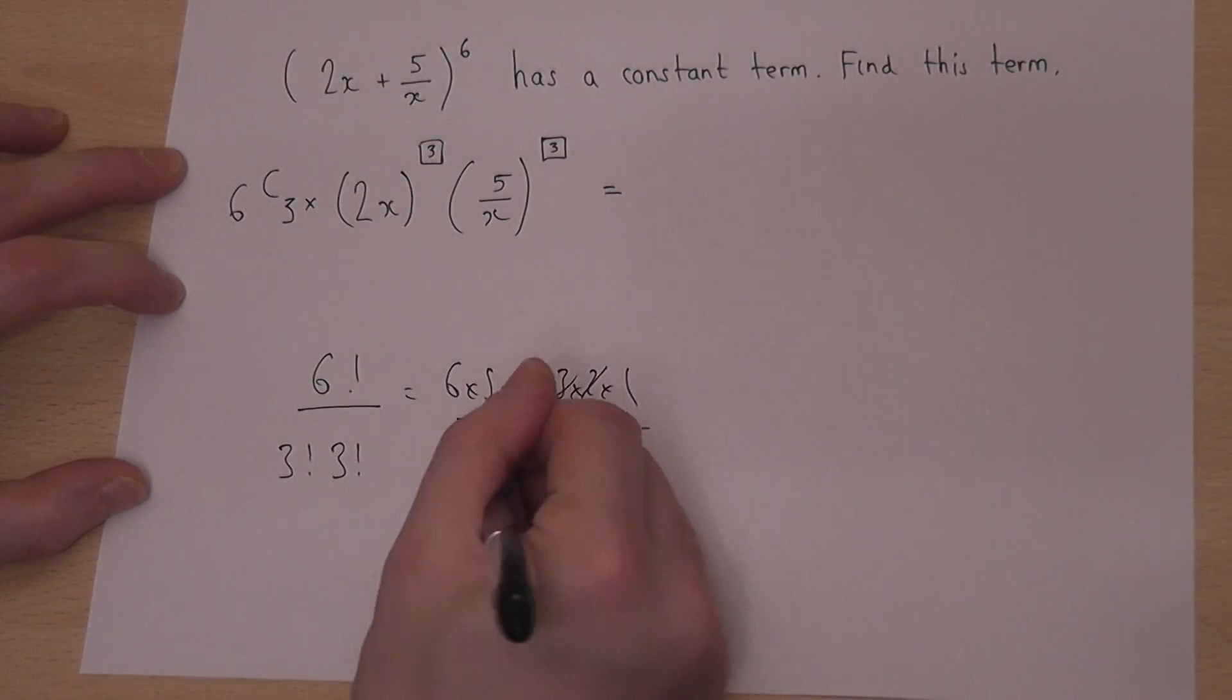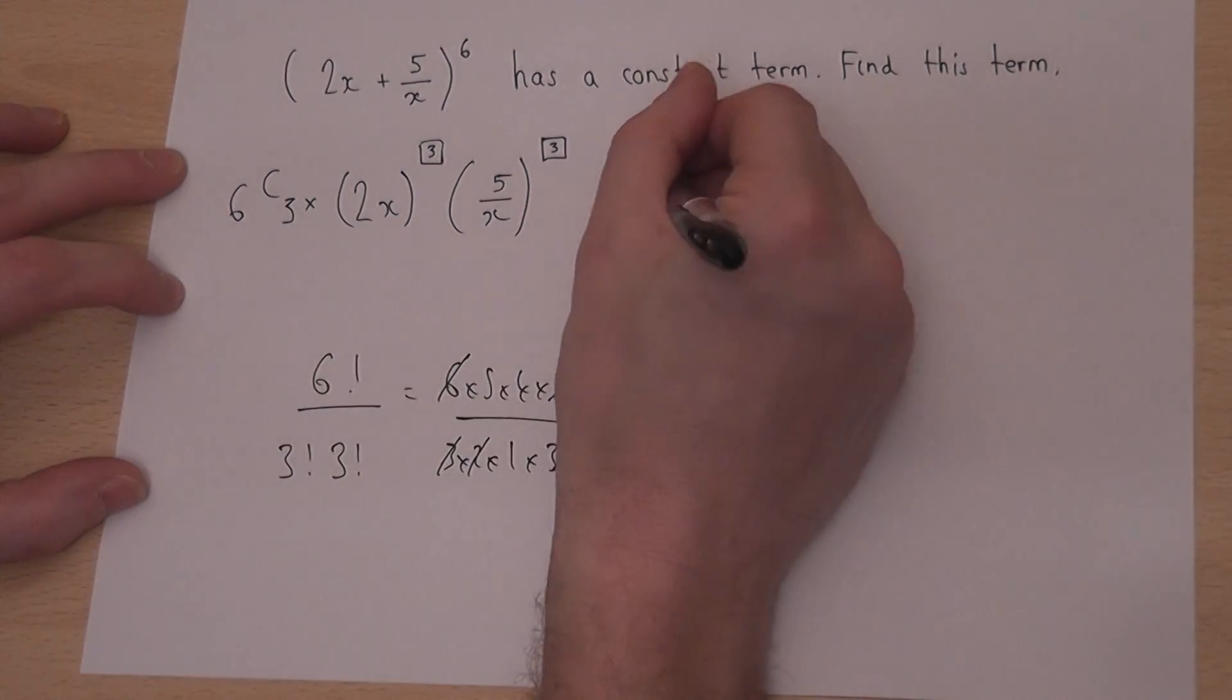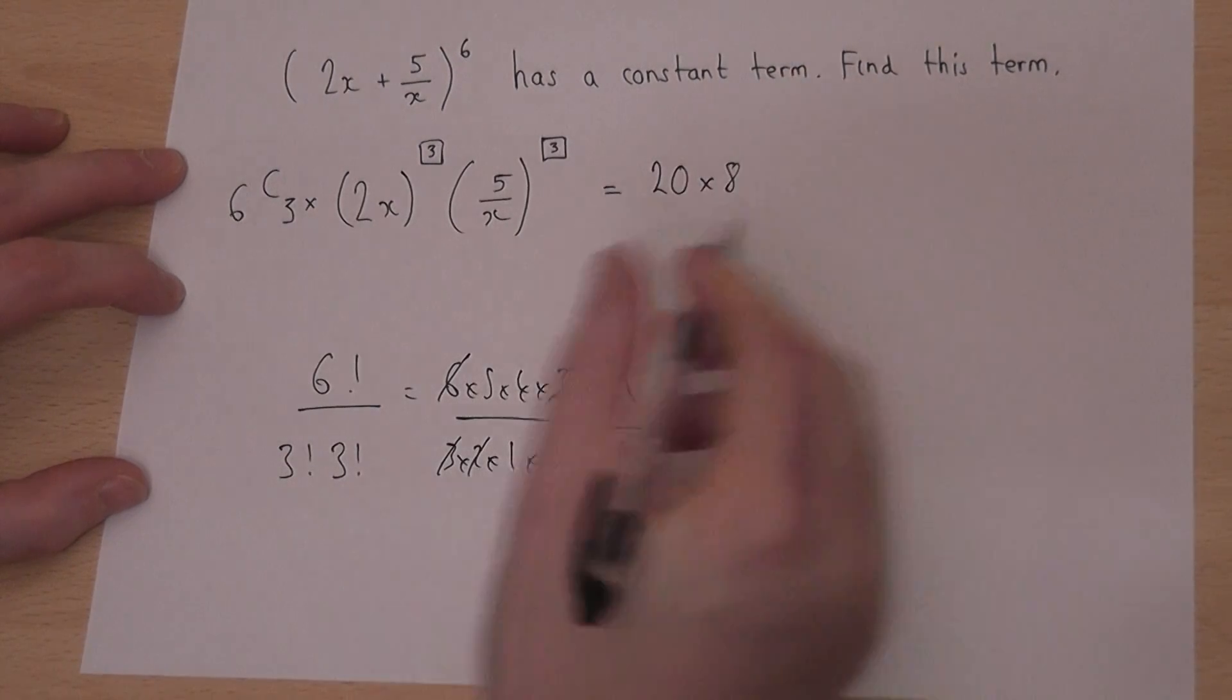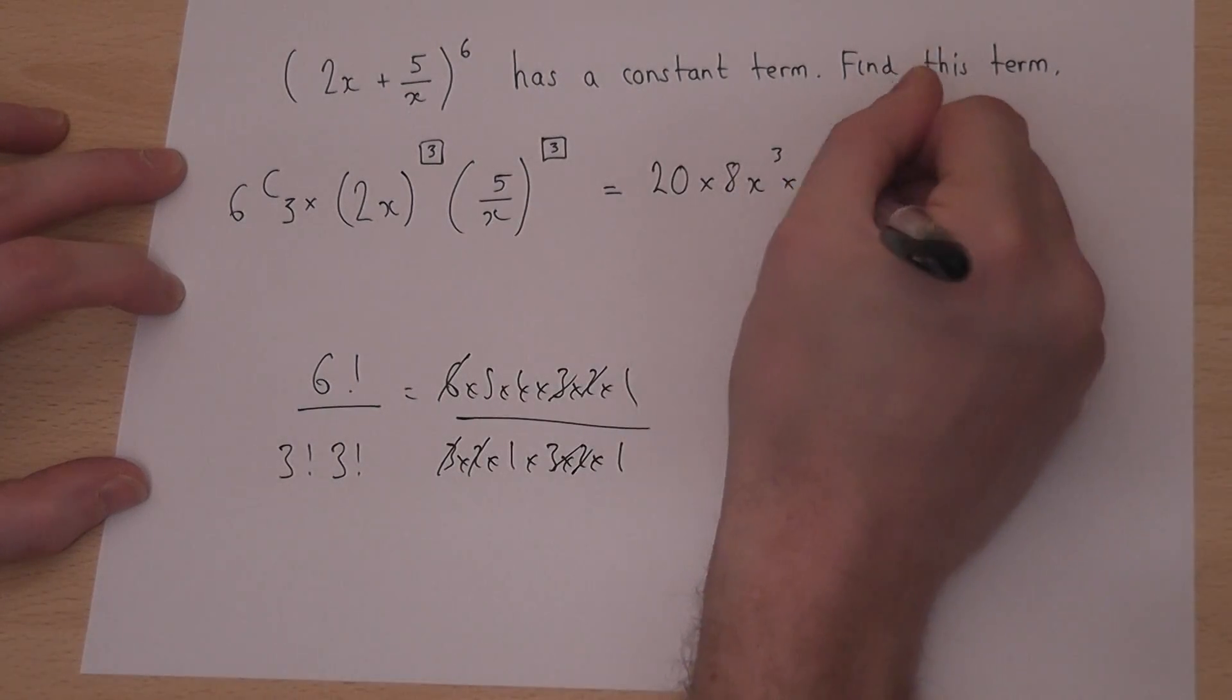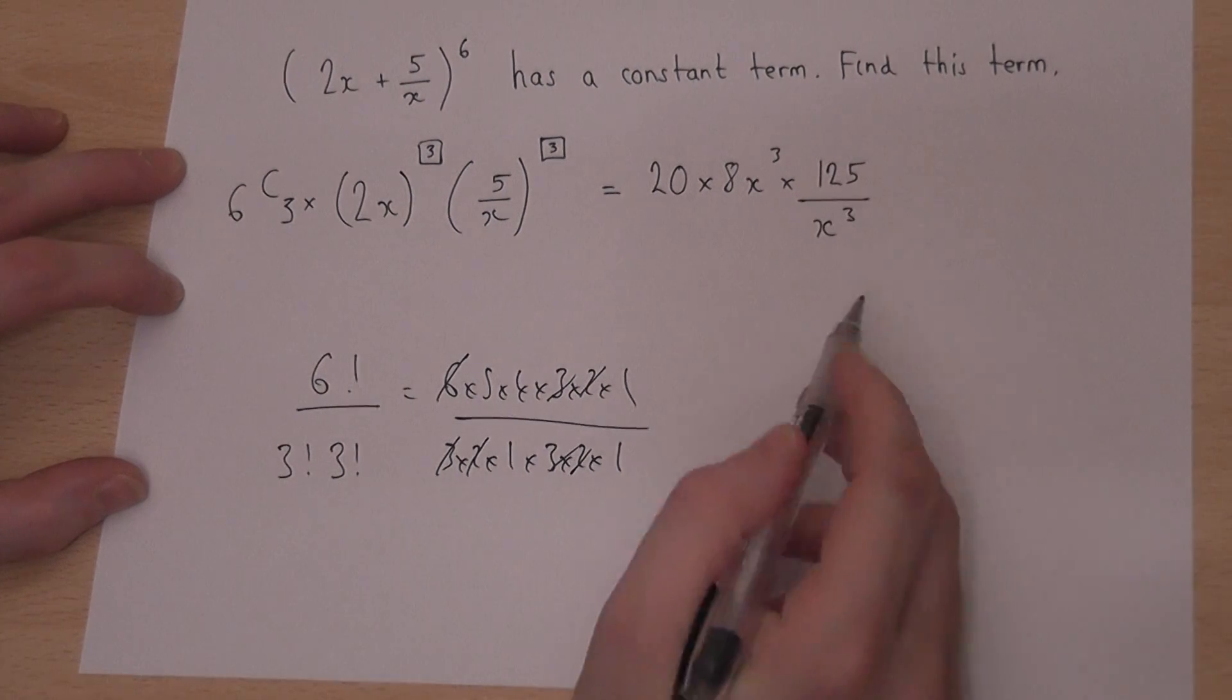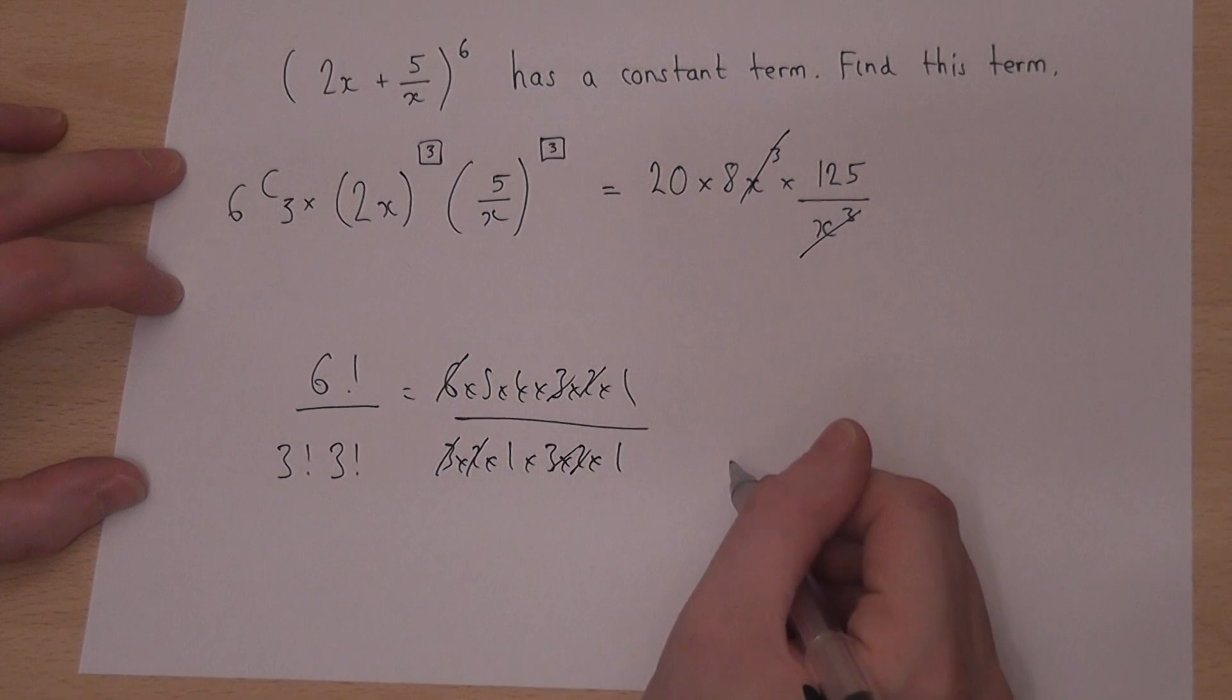3 times 2 is 6, so therefore the 6 goes, and we're left with 5 times 4, which is 20. Now, 2 cubed is 8, and x cubed is just x cubed. Then, 5 cubed is 125 over x cubed, and this is why they cancel out, because x cubed over x cubed will vanish.